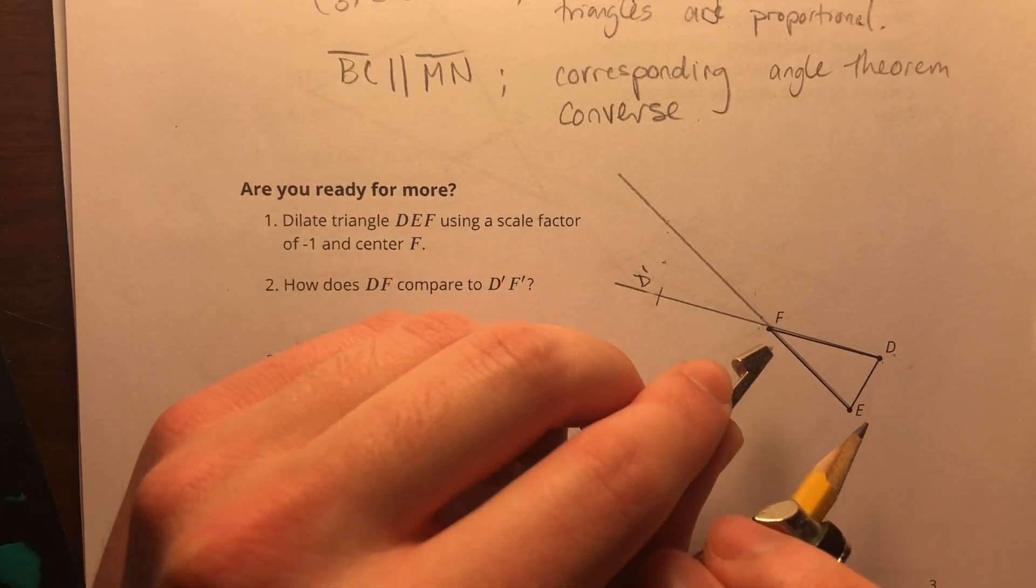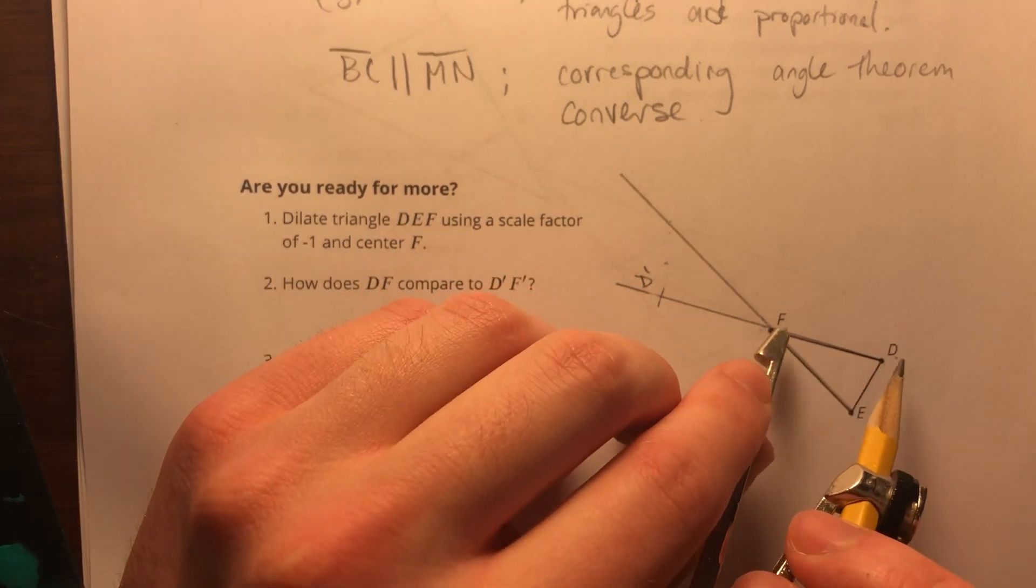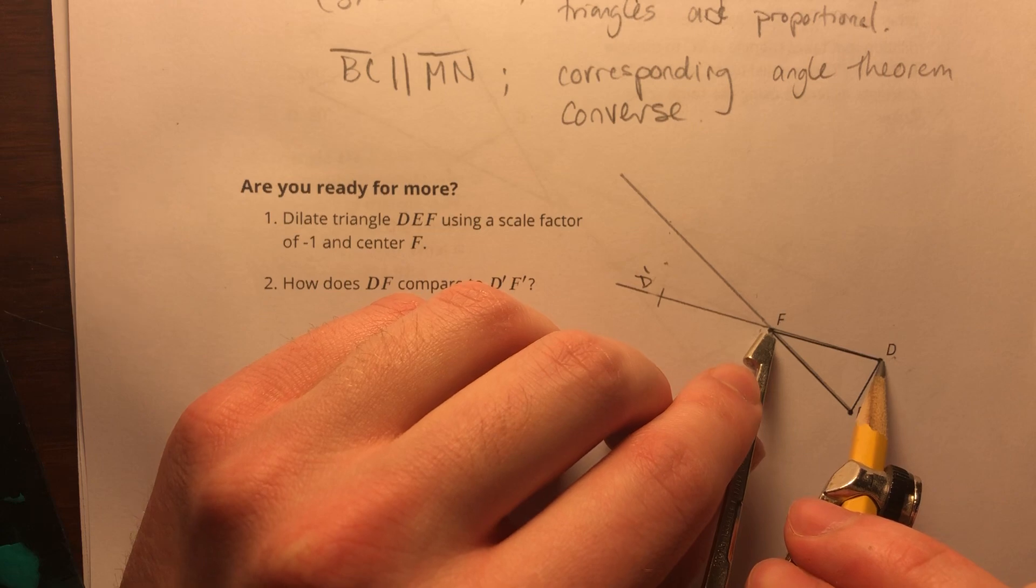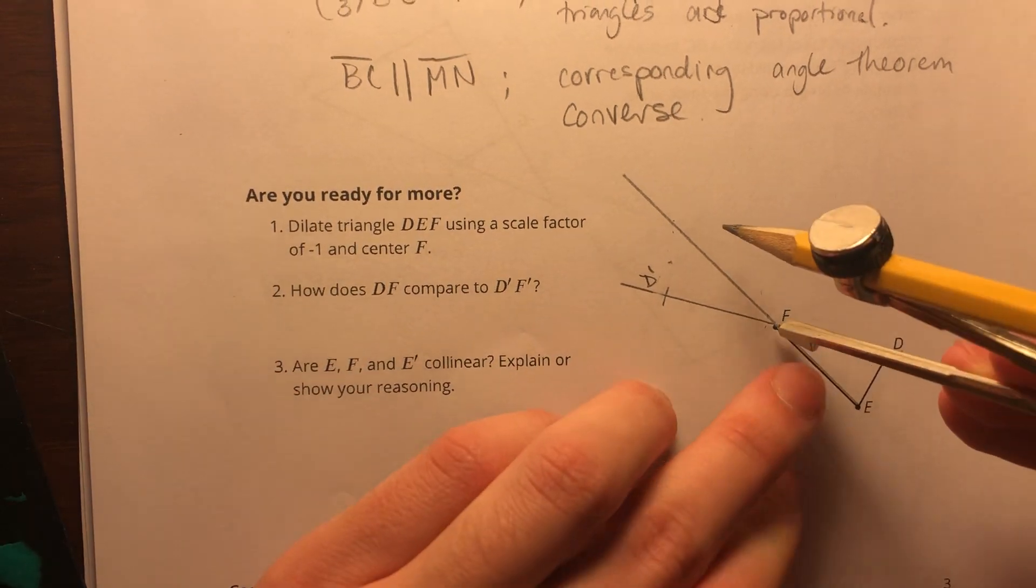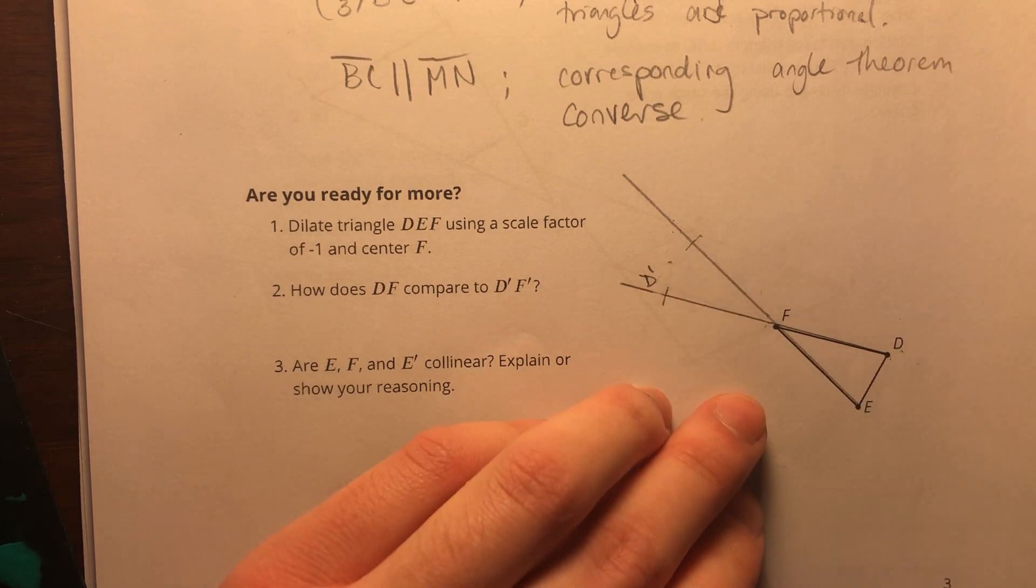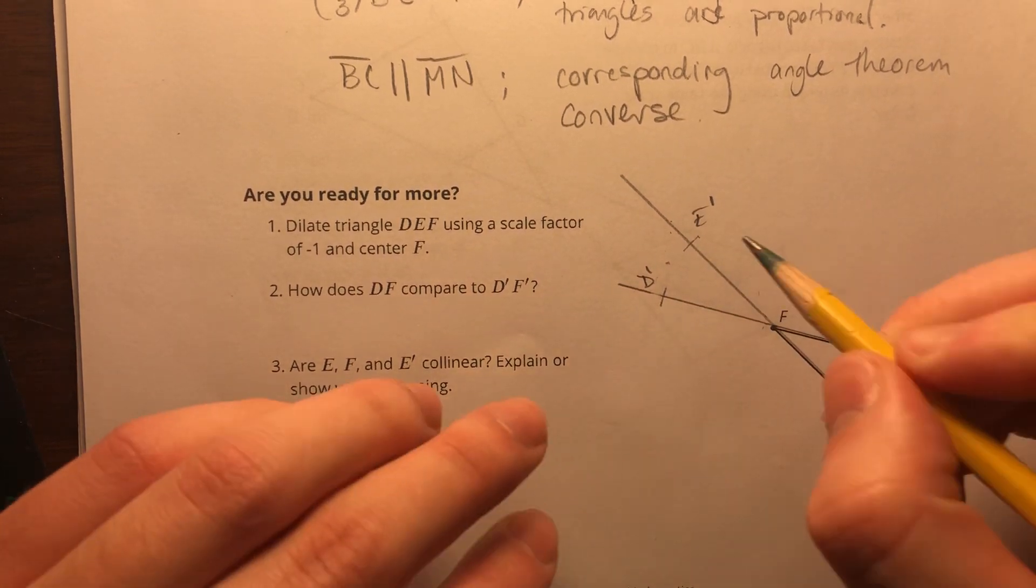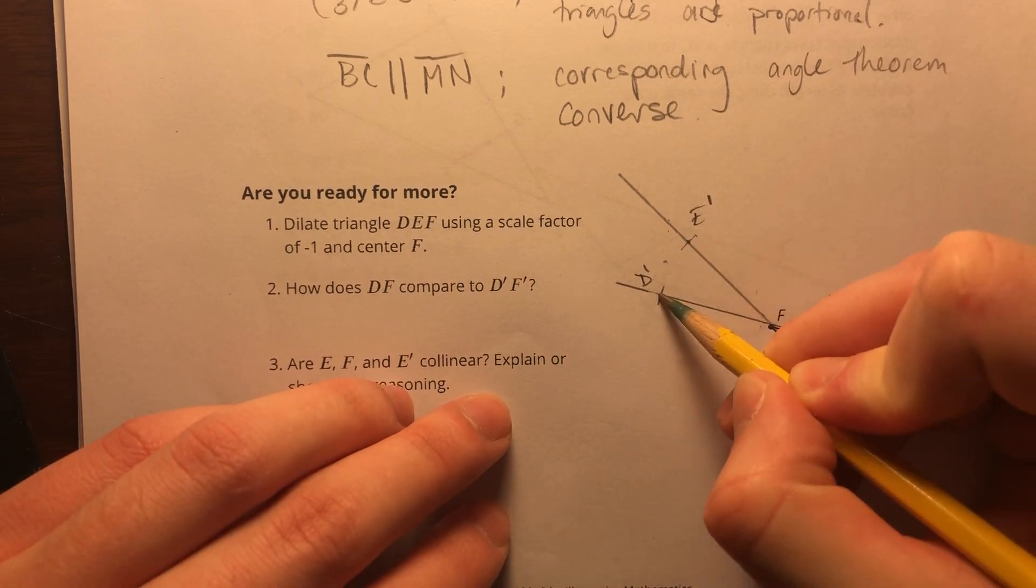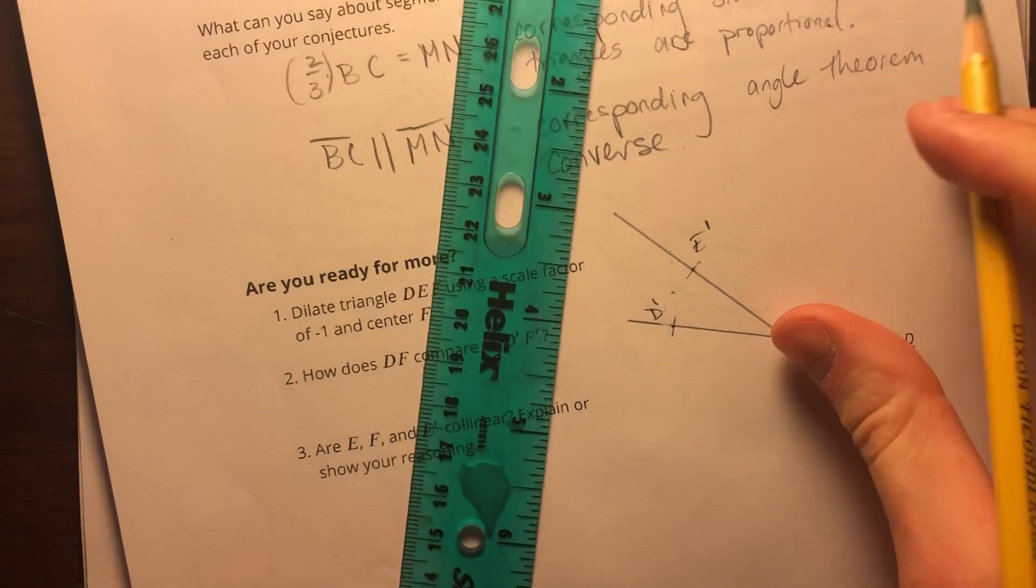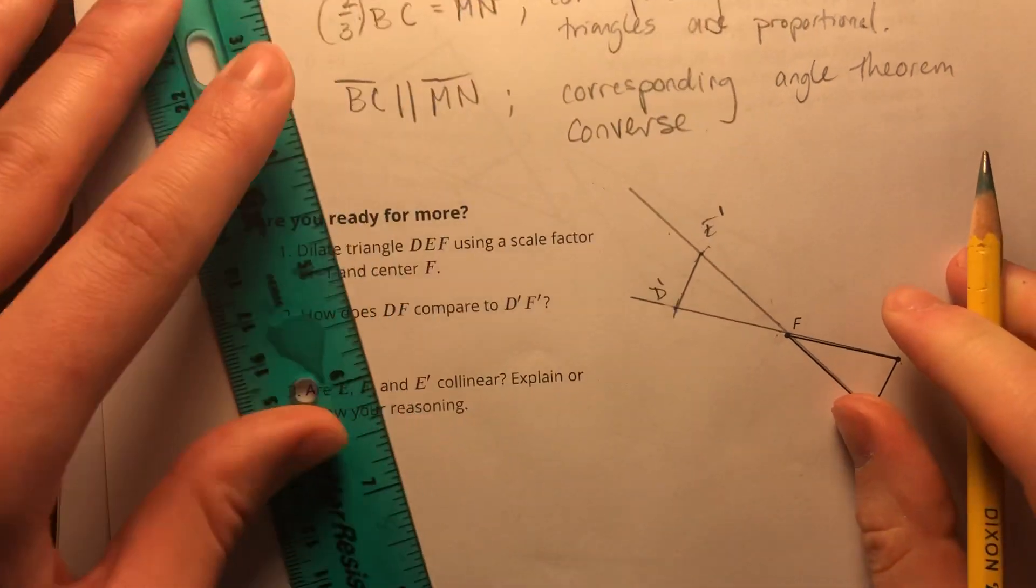I'm going to do the same thing with FE. Actually, this looks like it's an isosceles triangle, so I don't even have to change the length of my compass. These two sides are congruent. And that'll be E prime. I'm going to make my marks here to really show those vertices, and I'm going to connect them.